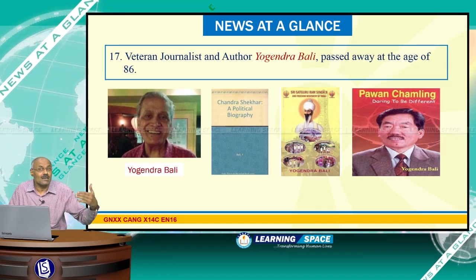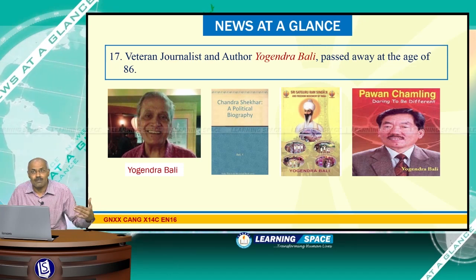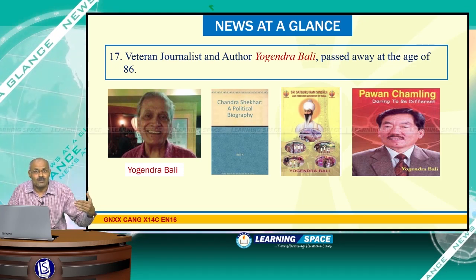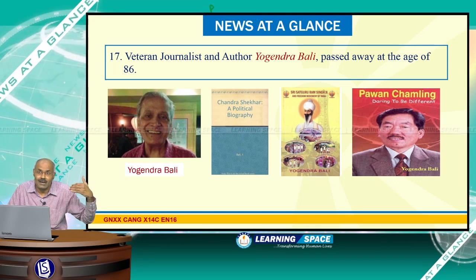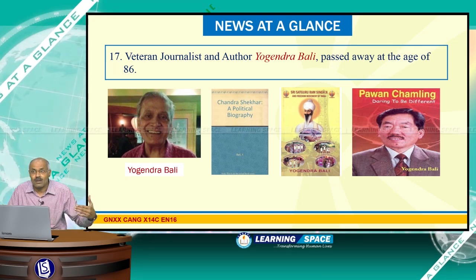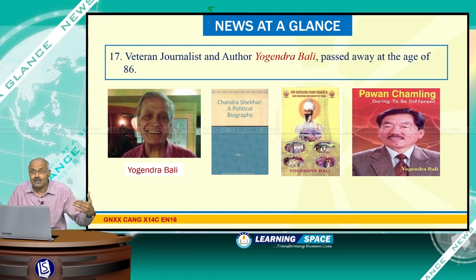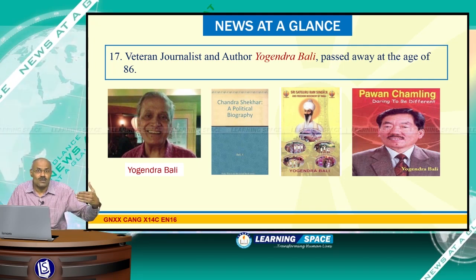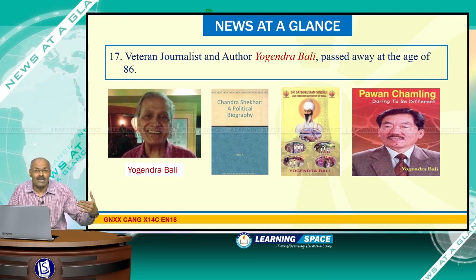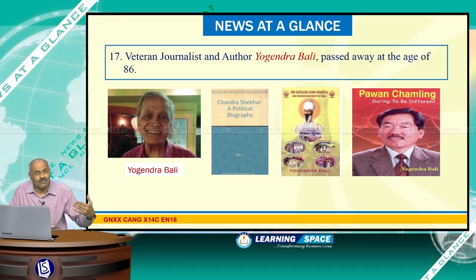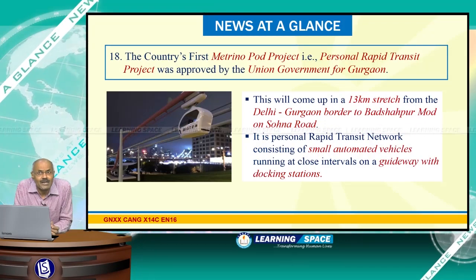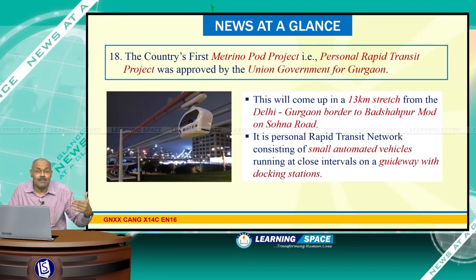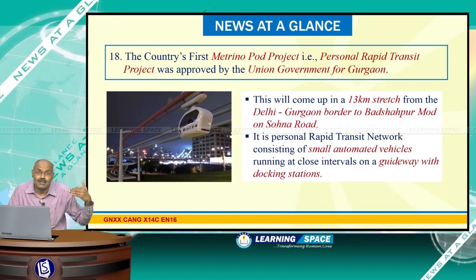Veteran journalist and famous author Yogi Indrabali, credited with famous books including 'Chandrasekhar: A Political Biography' and 'Pawan Chamling: Daring to Be Different,' died at the age of 86.